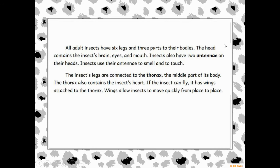The three parts are: the head, which contains the brain, the eyes, and the mouth — just like your head. They also have two antennae on their heads — those things that stick out on top. The antennae are used to smell and to touch. You and I use our hands to touch and our nose to smell, but an insect uses the antennae on top of their head.